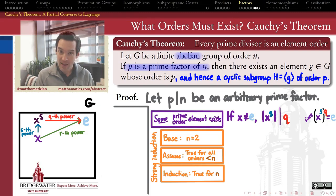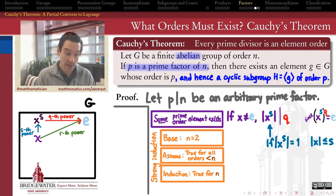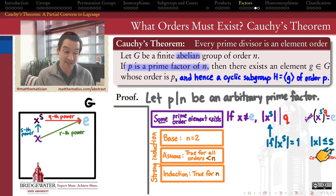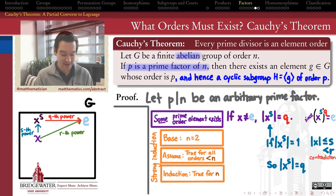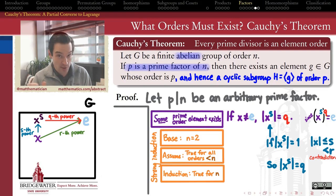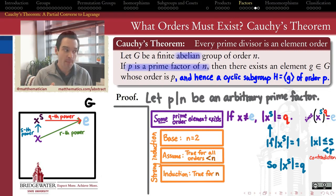Since Q is prime, its only divisors are 1 and itself. If the order of X^S were 1, that would mean X^S equals the identity. But X^S cannot be the identity because the order of X is R and S is less than R, so no smaller power of X can be the identity — a contradiction. Therefore the order of X^S cannot be 1, so it must equal Q. This proves that every finite group has some element whose order is prime.